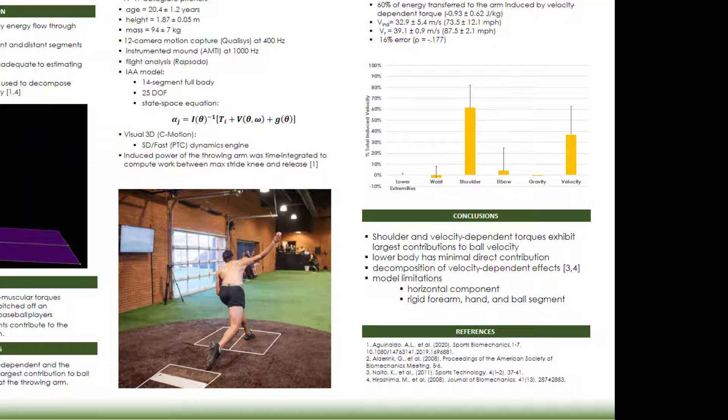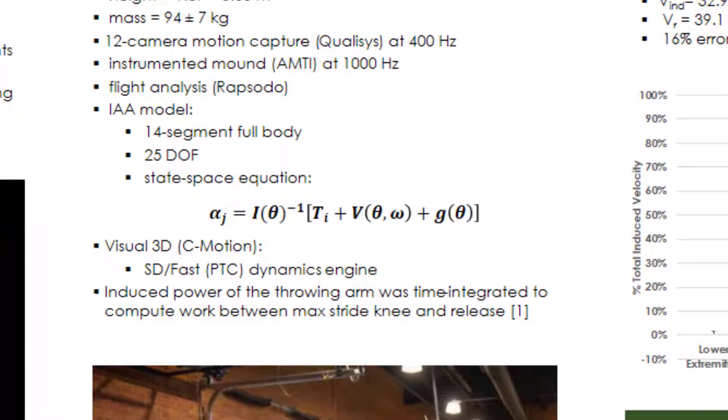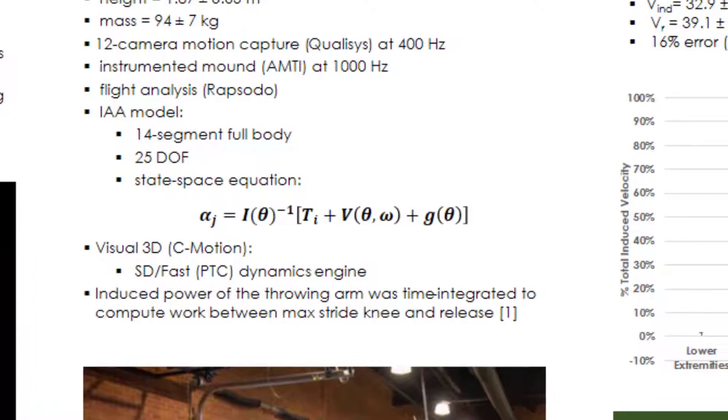We used a 14-segment full-body IAA model here, 25 degrees of freedom, that was governed by the state-space equation as shown here. The dynamics equation was derived in SD/FAST and implemented in Visual 3D, and then we calculated induced power using previous techniques.